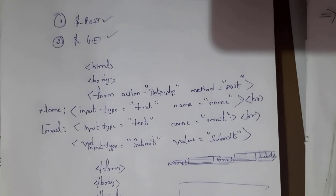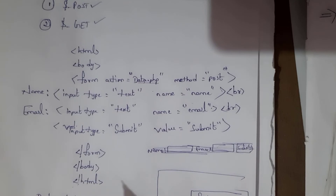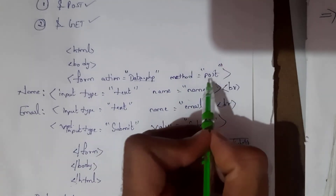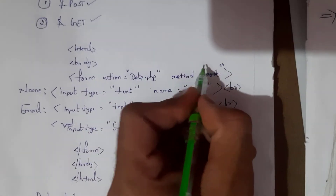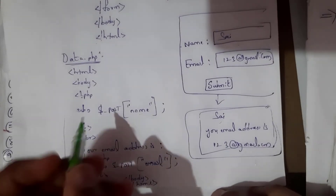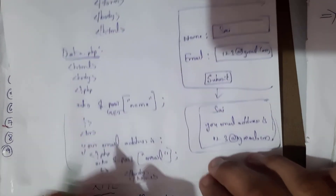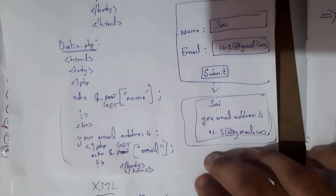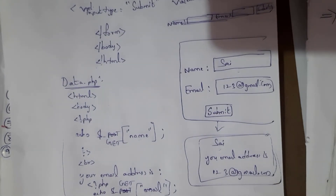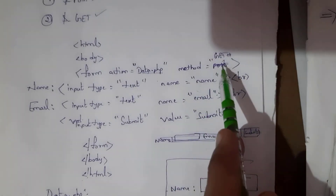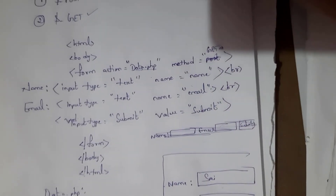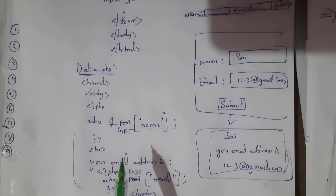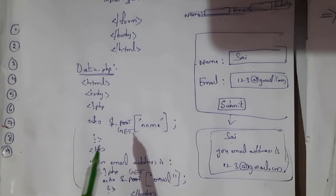Next is the GET method. The GET method is the same as the POST method — the difference is that in the form's method attribute, instead of post we write get. Similarly, in data.php instead of dollar-sign POST we use dollar-sign GET. The rest of the program is the same; you only change post to get in the method and in the data.php file.